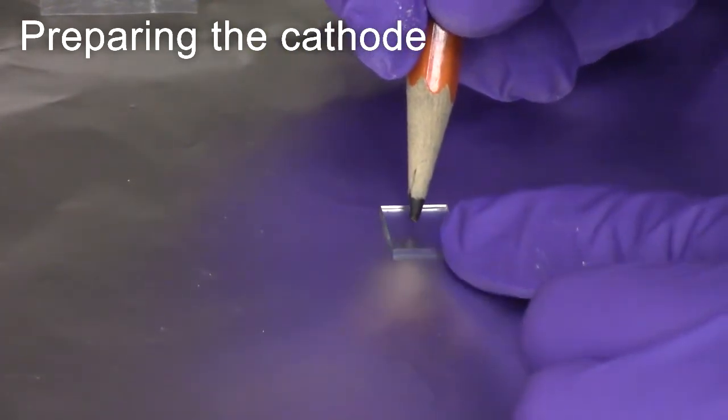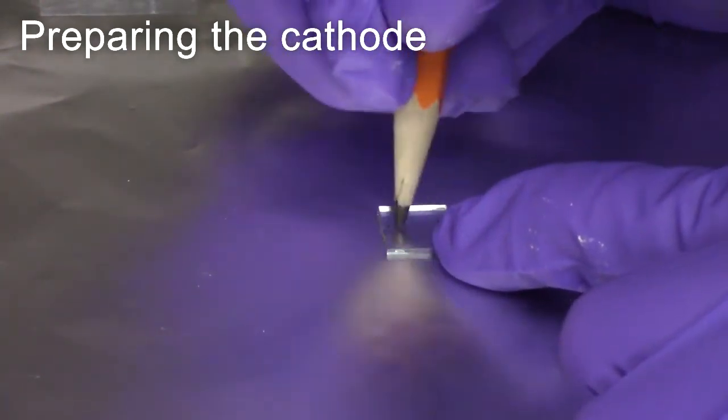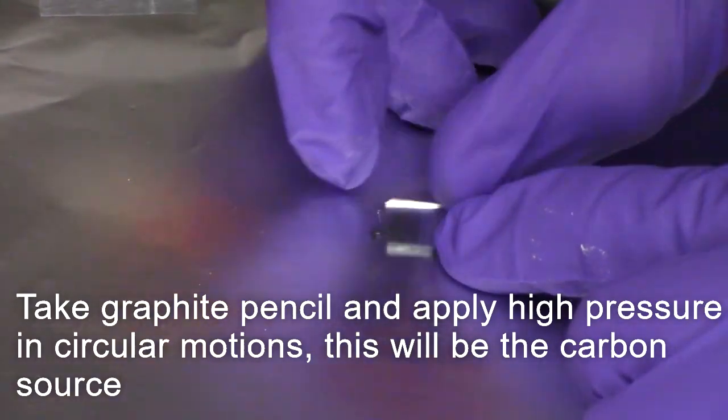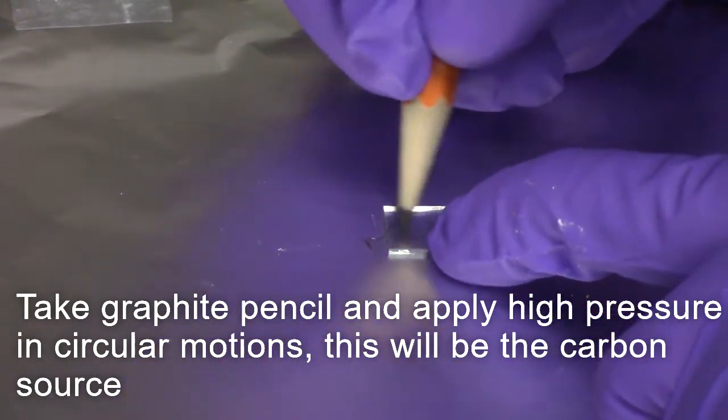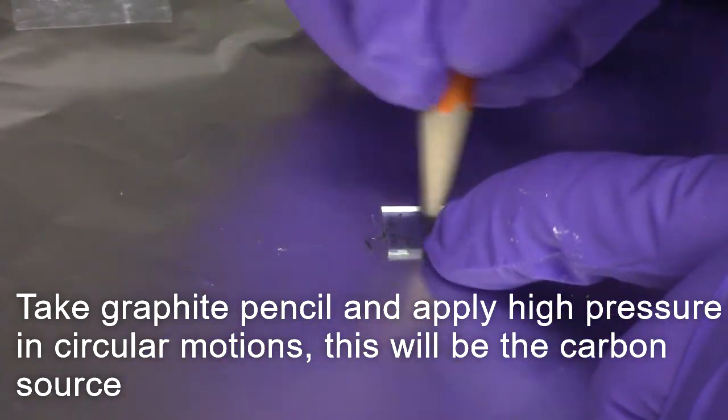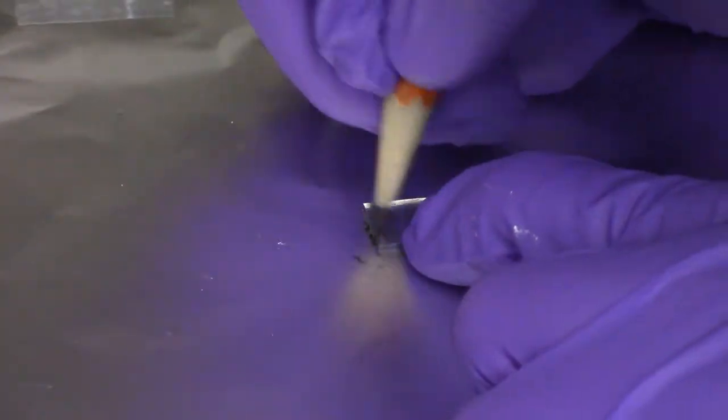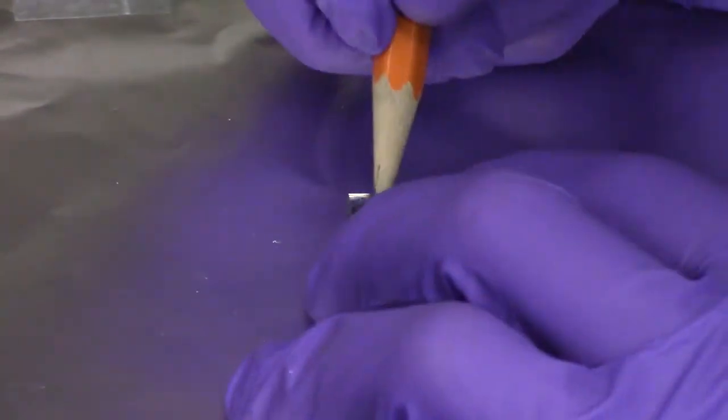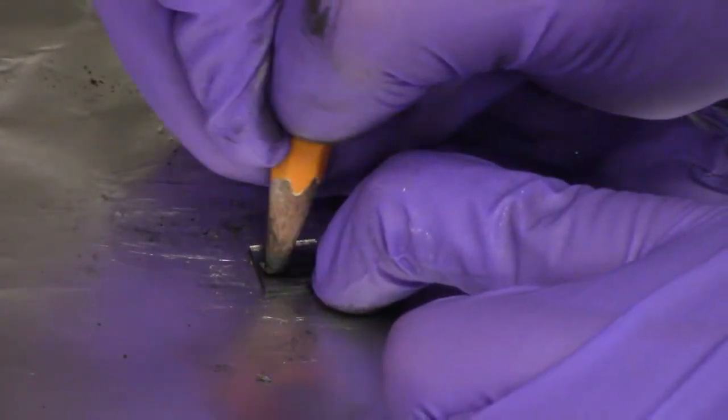We now move on to preparing the cathode. Ensure that the conductive side is facing up using the methods shown previously. Begin by taking a graphite pencil and applying high pressure in circular motions. This will be the carbon source and which will ultimately form the cathode. Continue applying high pressure until there is a significant graphite deposit.